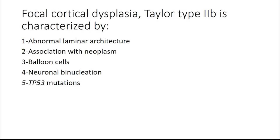Question 4: Focal cortical dysplasia Taylor type 2b is characterized by: abnormal laminar architecture, association with neoplasm, balloon cells, neuronal binucleation, or TP53 mutations? The answer is balloon cells. You do have abnormal laminar architecture, as in lesser grades of cortical dysplasia, but the most characteristic distinguishing feature is the presence of balloon cells. TP53 mutations are not a feature — some focal cortical dysplasias have been found to have PTEN mutations, so molecular alterations do occur in some cases, but not TP53.